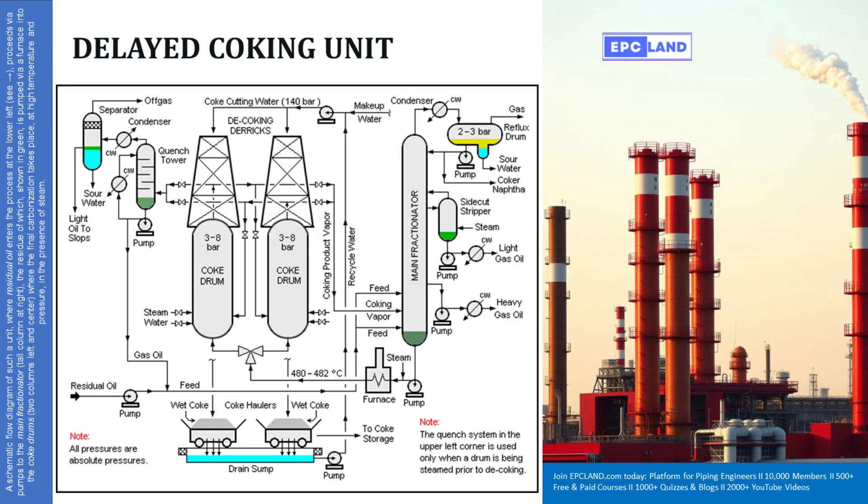It flows into one of two big vessels called coke drums. They're kept under pressure, maybe 3 to 6 bar. Two of them. Why two? Ah, that's key for continuous operation. They alternate. While one drum is actively filling up with the hot oil and, you know, cooking the coke.